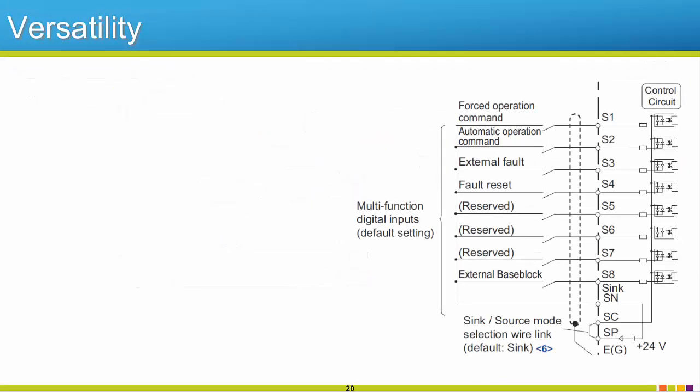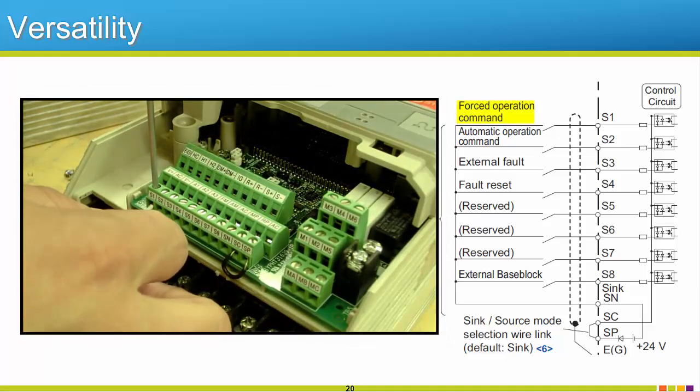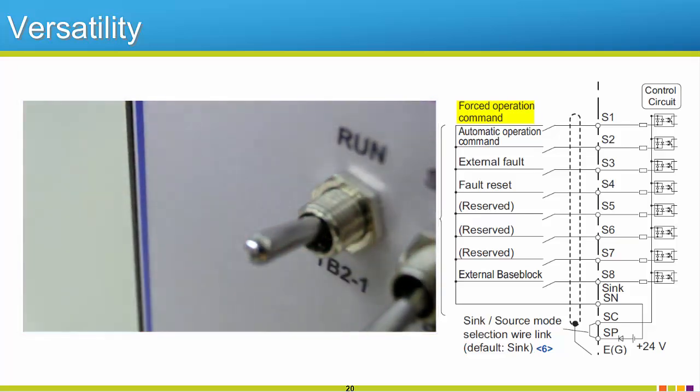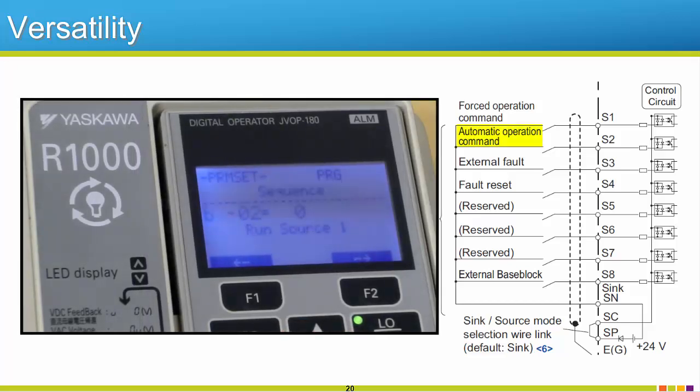The R1000 sequencing can be integrated into any new or existing application. A systems integrator can opt to wire a forced or an automatic operation command. A forced command will manually start the regen unit operation. The automatic command can be considered a little bit more intelligent as it will activate and deactivate the R1000 as the DC bus voltage increases or decreases. So it will only be operating when the application is in a regenerative state.